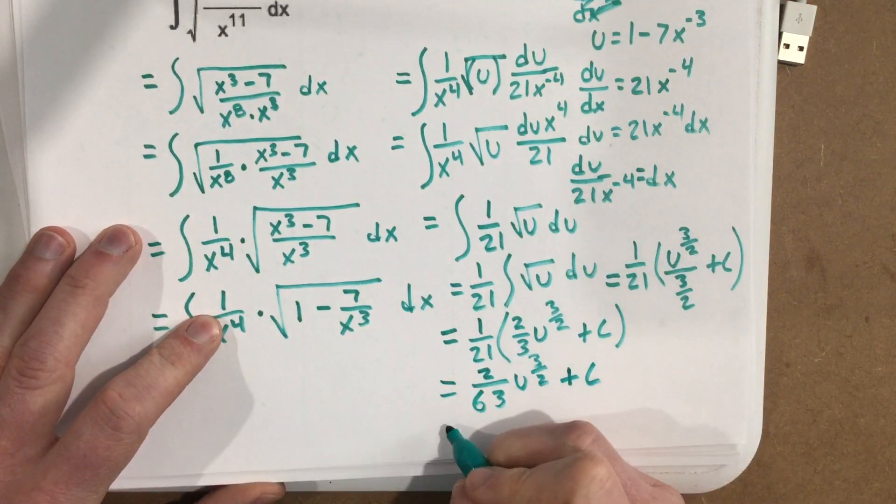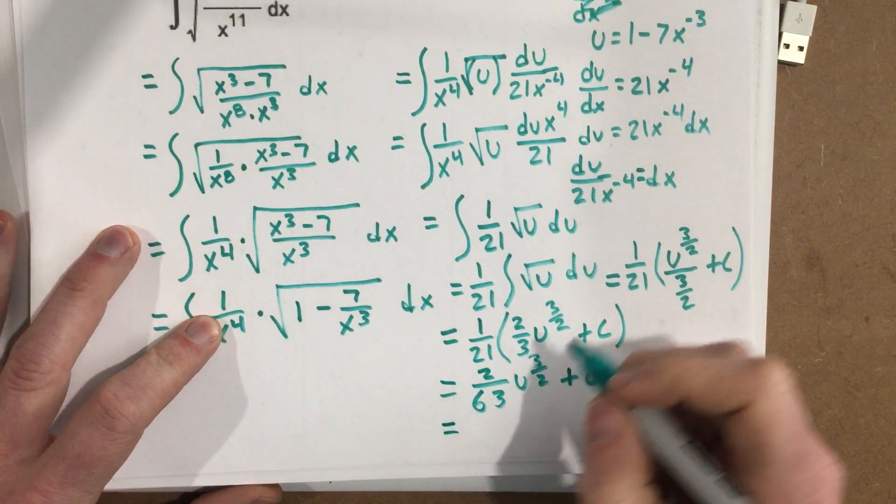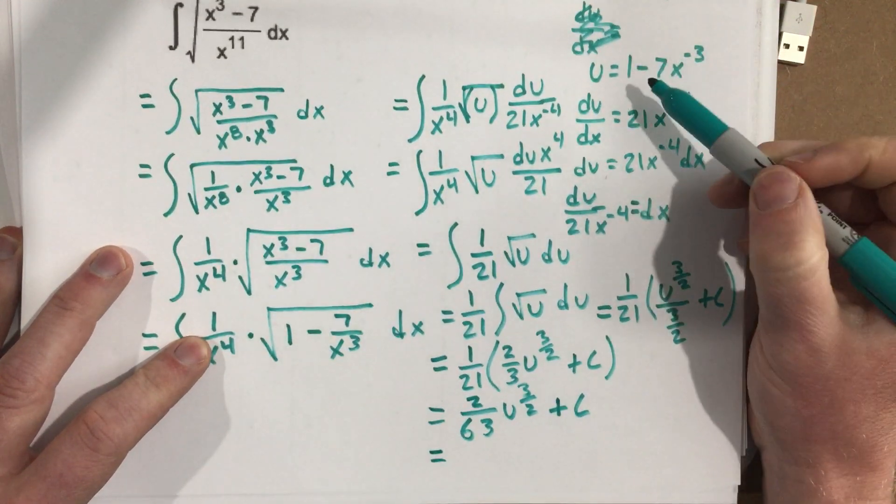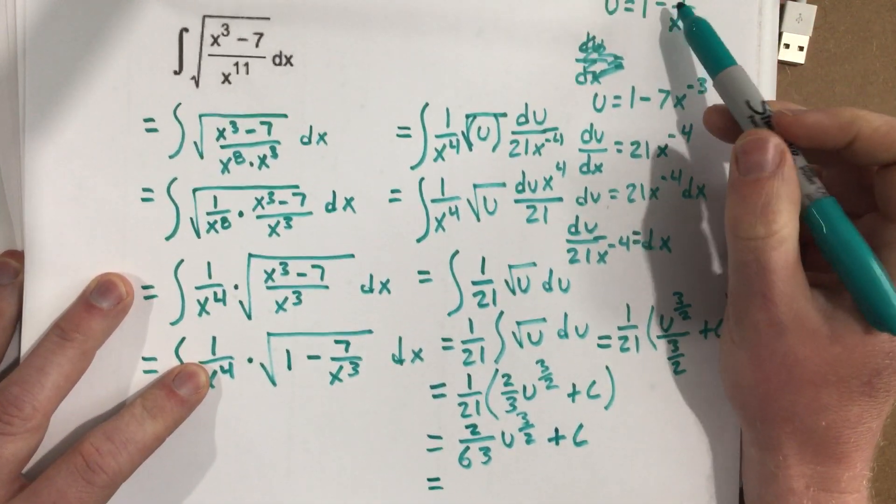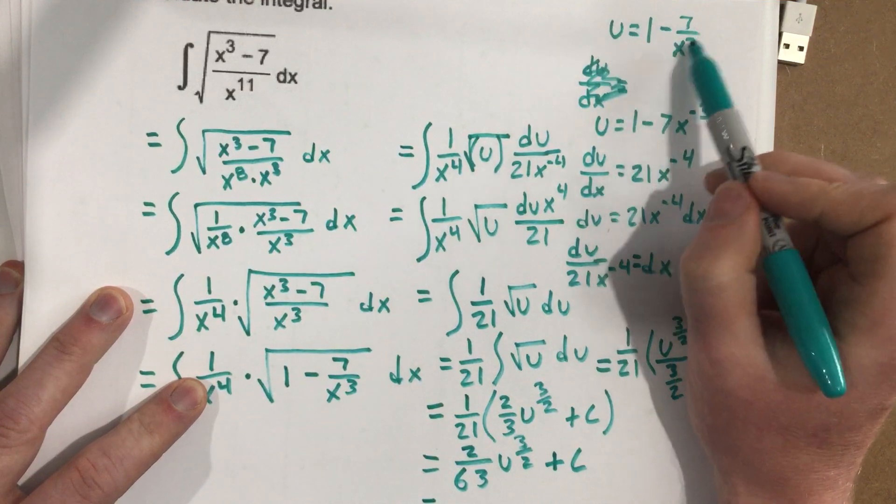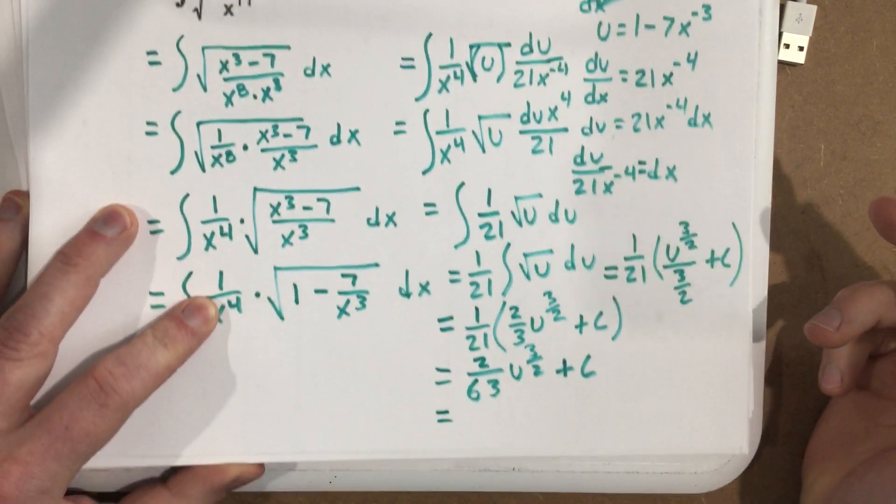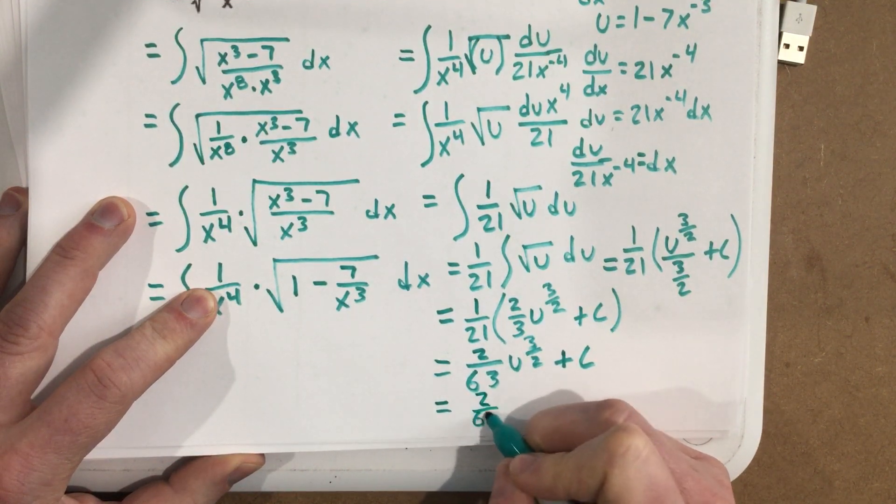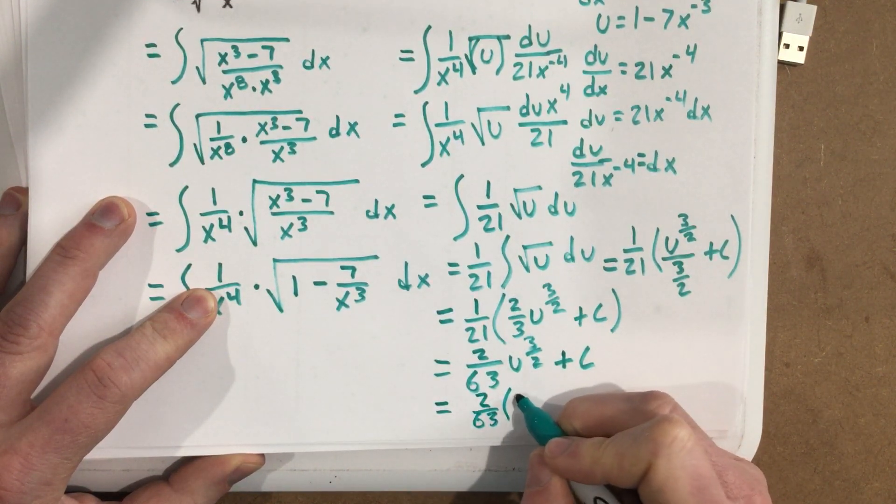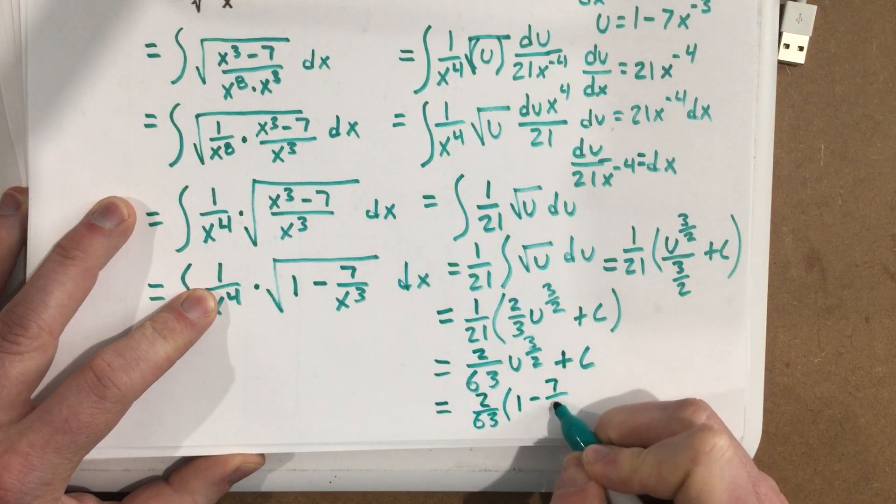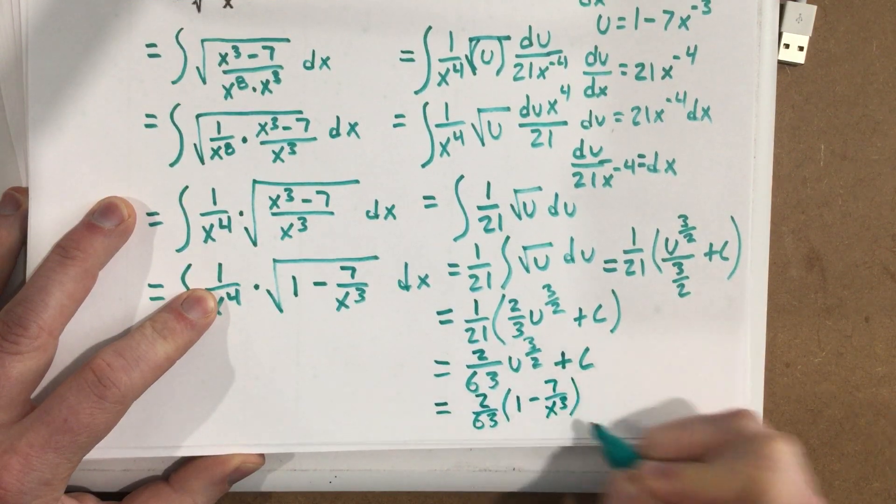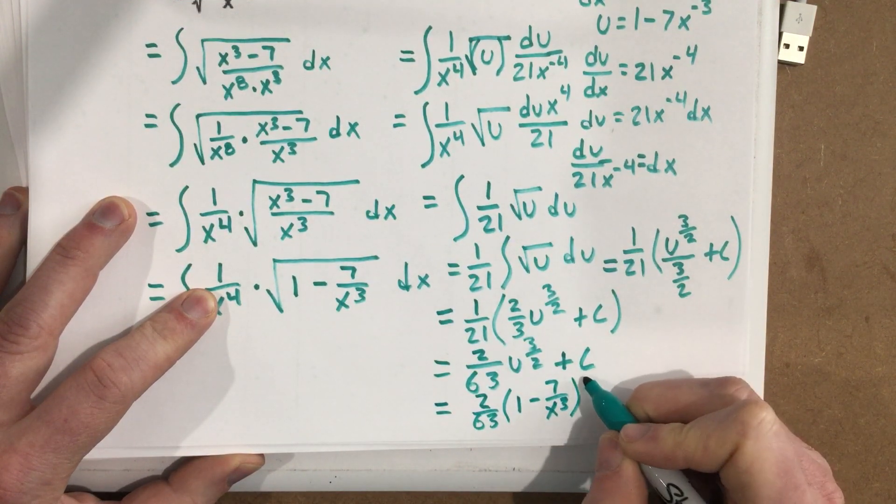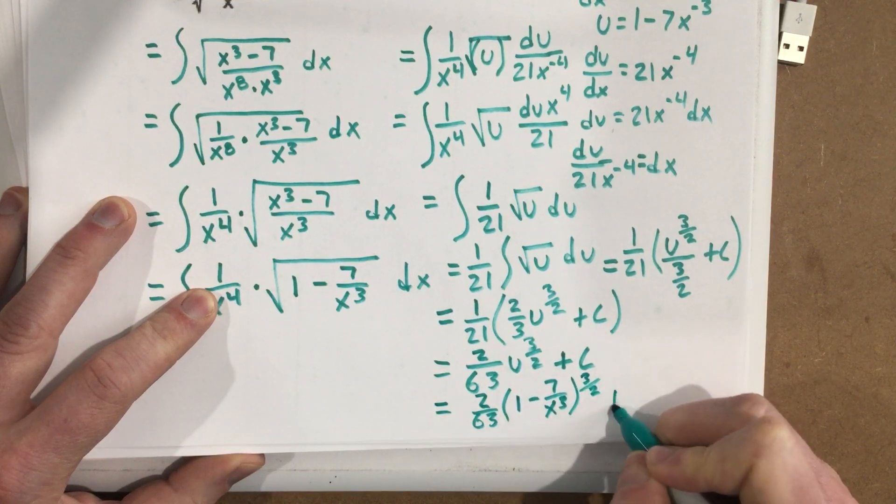And then I substitute in our u value, which remember our u value is right here. I can even go up a little higher, right there. So u value is 1 minus 7 over x cubed. And I get 2 over 63, 1 minus 7 over x cubed to the 3 halves plus c.